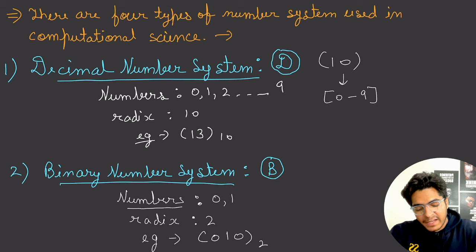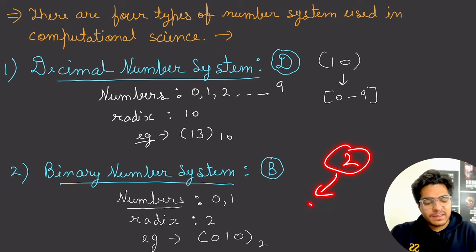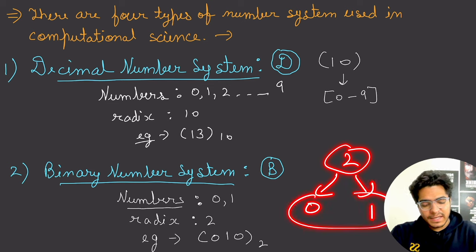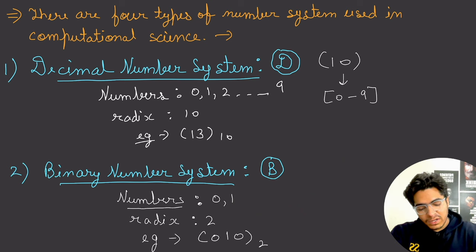The binary number system has radix 2, so the only valid digits are 0 and 1 — less than 2. For example, 0, 1, 0, 1 is a valid binary number, but 0, 1, 0, 2 is not because 2 is not allowed in binary.